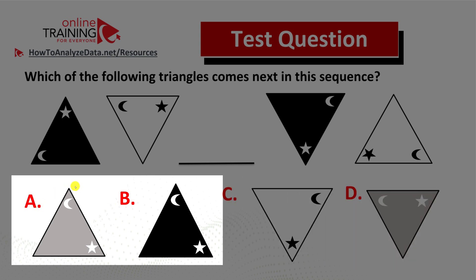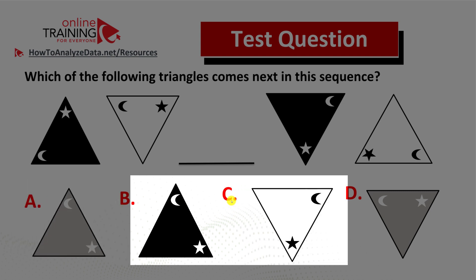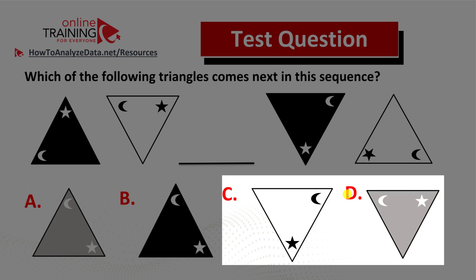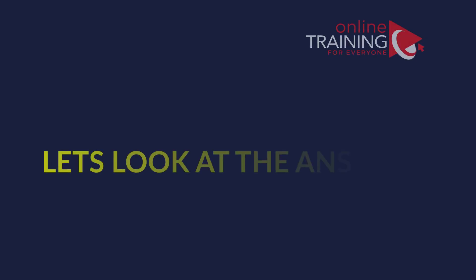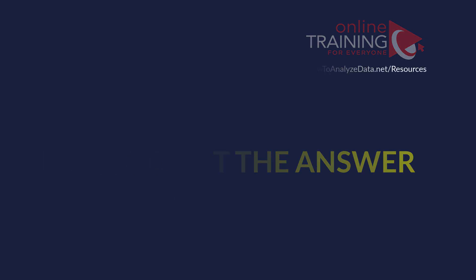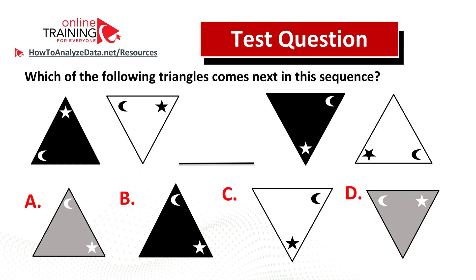Choices A and B are represented by gray and black triangles pointing toward the top, and choices C and D are represented by white and gray triangles pointing to the bottom. Do you think you know the answer? Now might be the right time to pause this video to see if you can come up with the answer on your own. Let's continue to see how we can solve this challenge together.